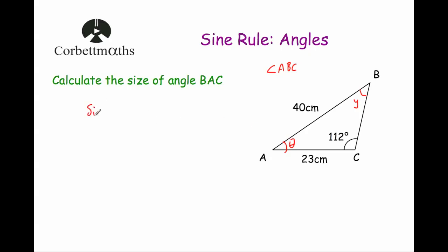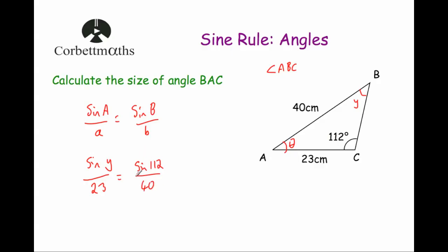So let's write down the sine rule: sine A over little a equals sine B over little b — the angle and the side opposite it. We're focusing on Y, so we write sine Y over 23 equals sine 112 over 40. We work out sine 112 divided by 40 on the calculator, and that gives sine Y over 23 equal to 0.023179 and so on. Multiplying both sides by 23 gives sine Y equals 0.53313 and so on.